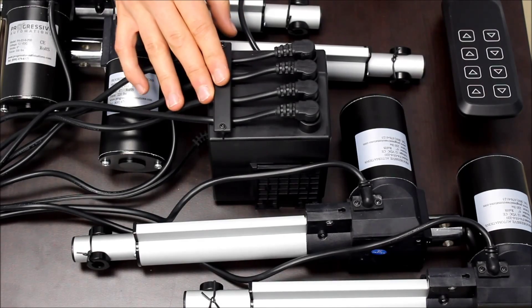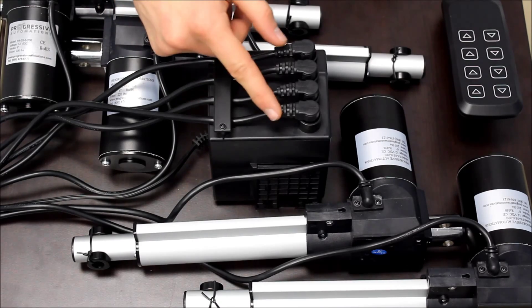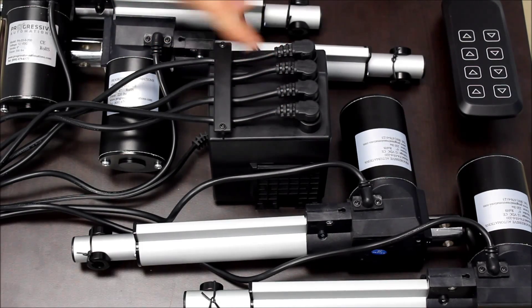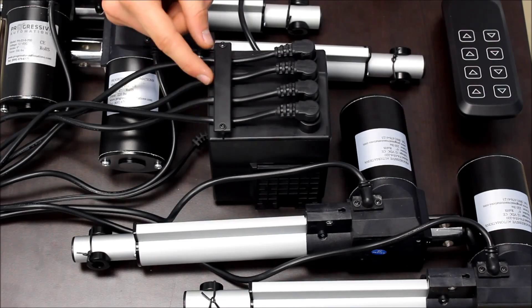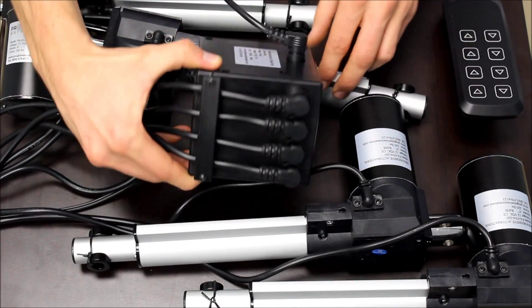Here is the PA24 controlling four actuators. You have the four connections on top for the actuators with the bar to keep the wiring neat, and the connection for the remote is on the side.